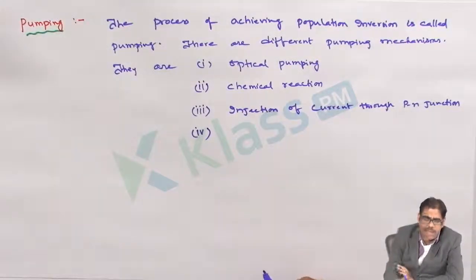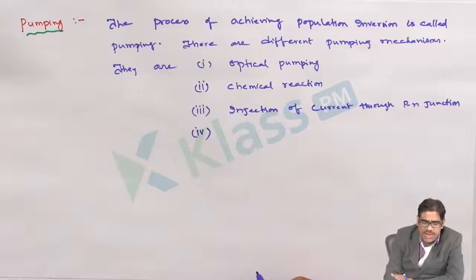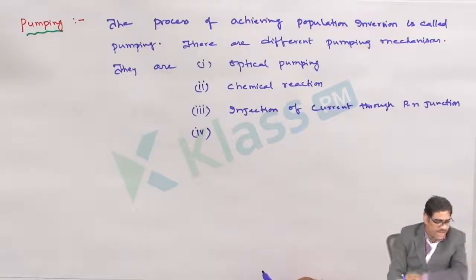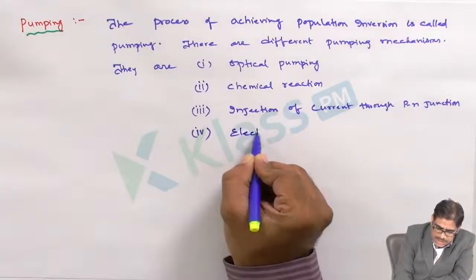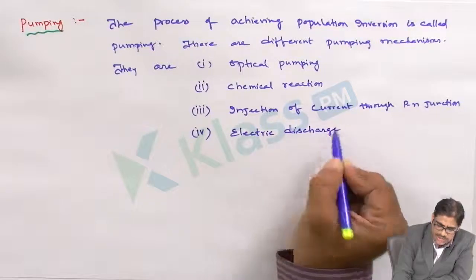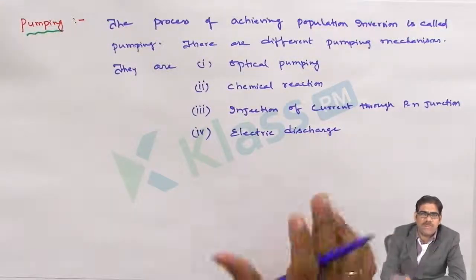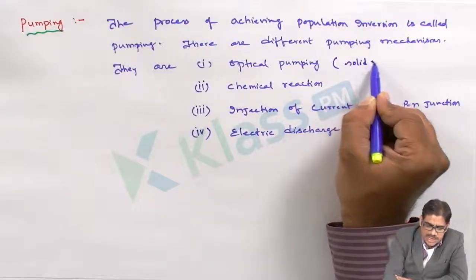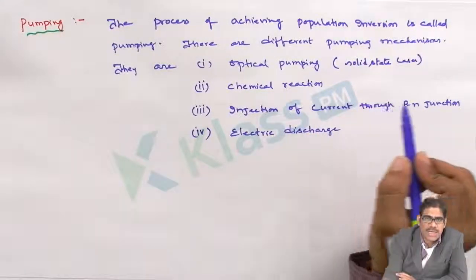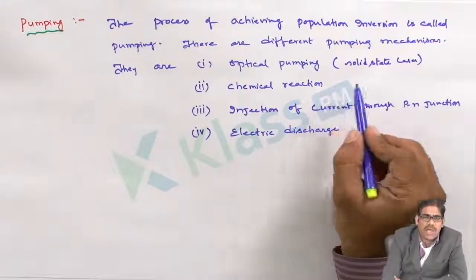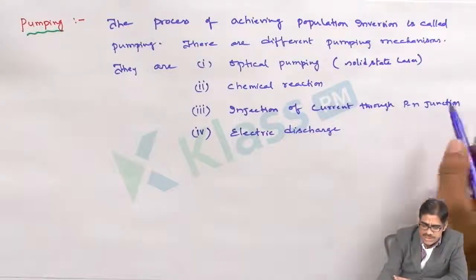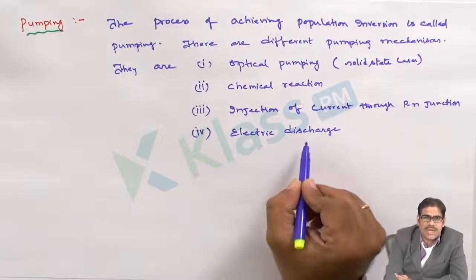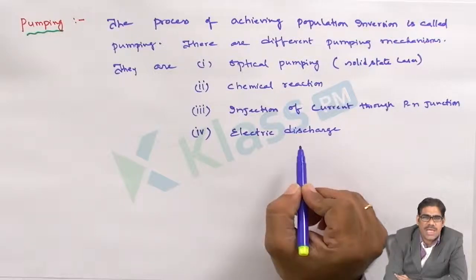There are different pumping mechanisms involved: optical pumping, chemical reaction, injection of current through P-N injection, and electric discharge — that is, discharge of electricity through gases, which is related to gas lasers. Optical pumping is applicable in the case of solid state lasers. Chemical reaction is a pumping mechanism involved with ionian lasers. Injection of current through P-N junction corresponds to semiconductor lasers. Electric discharge is applicable for gas lasers.